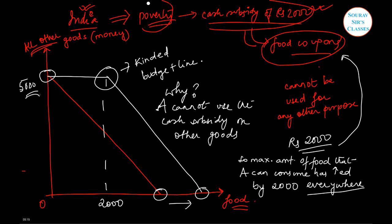He can still have 5000 units of this good only. This 2000 will not be added here because it has to be exclusively spent on only food. That's why we get a kinked budget line.